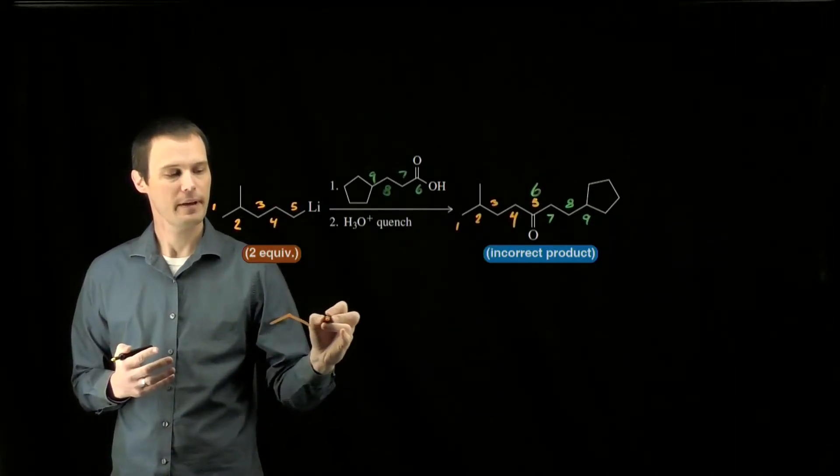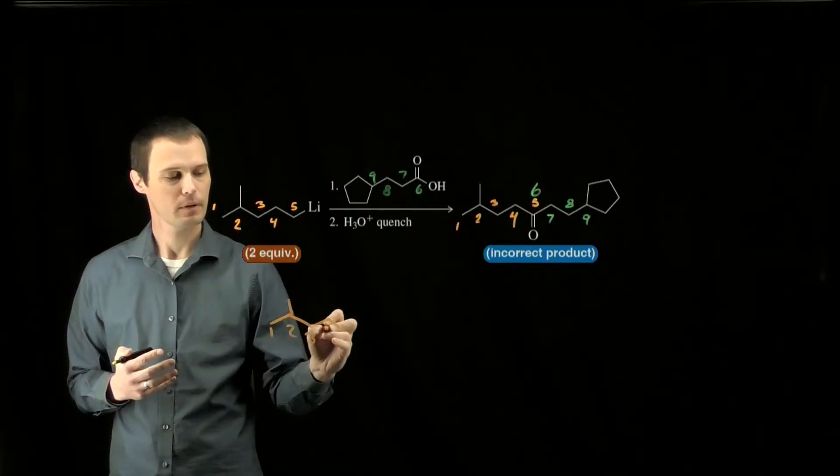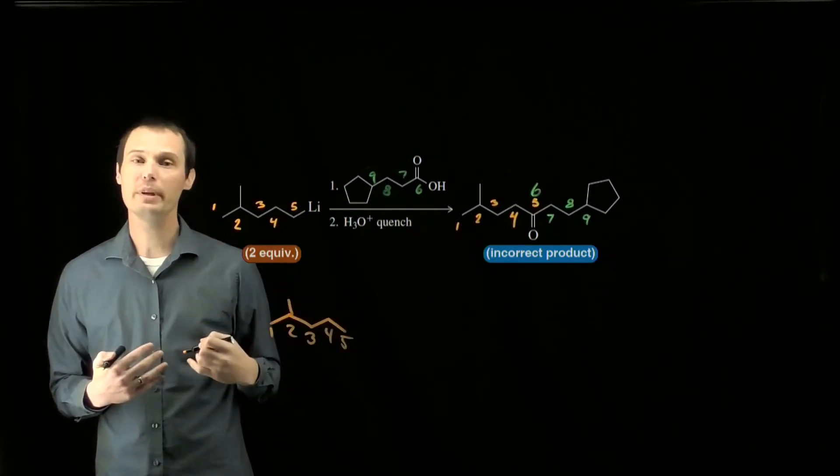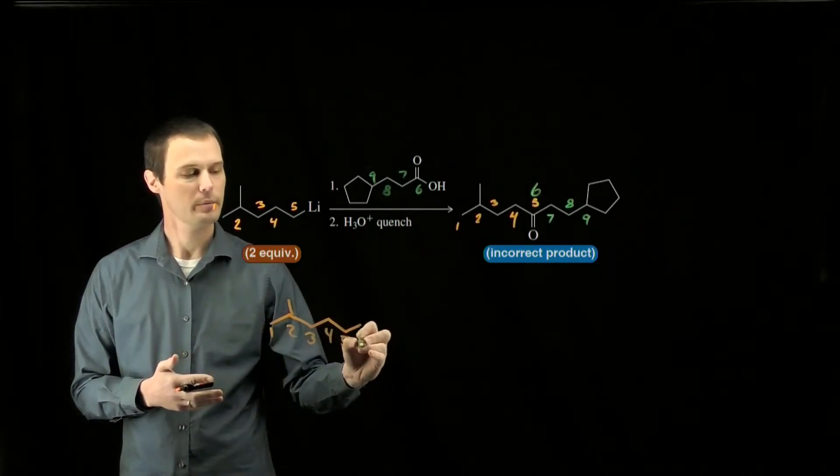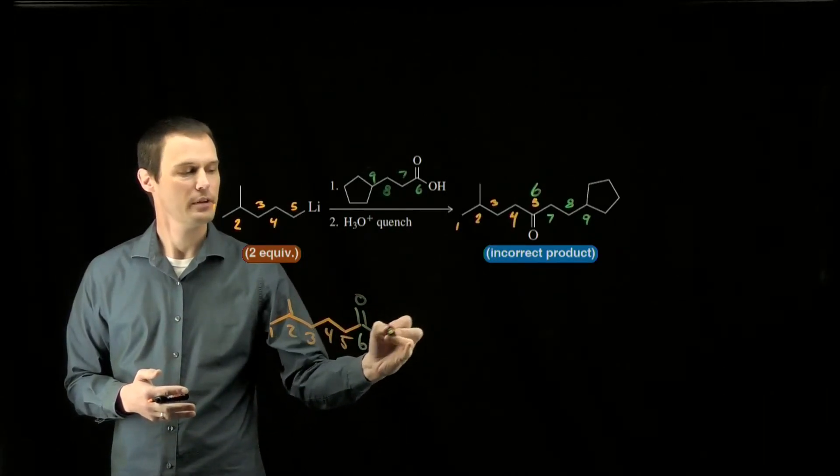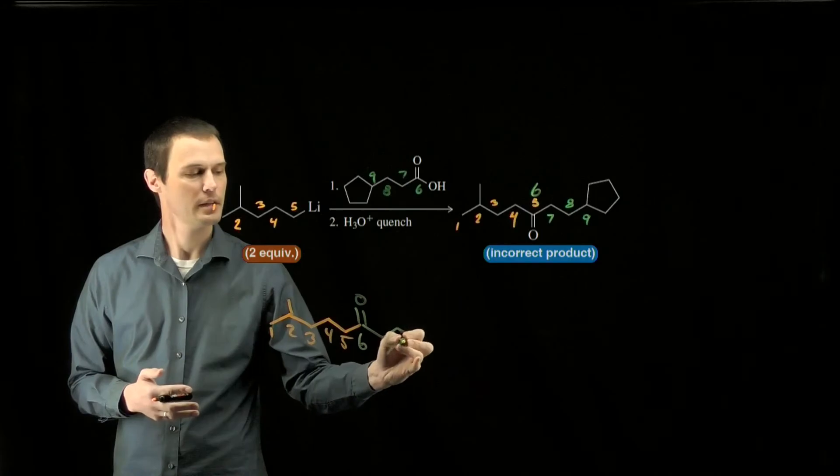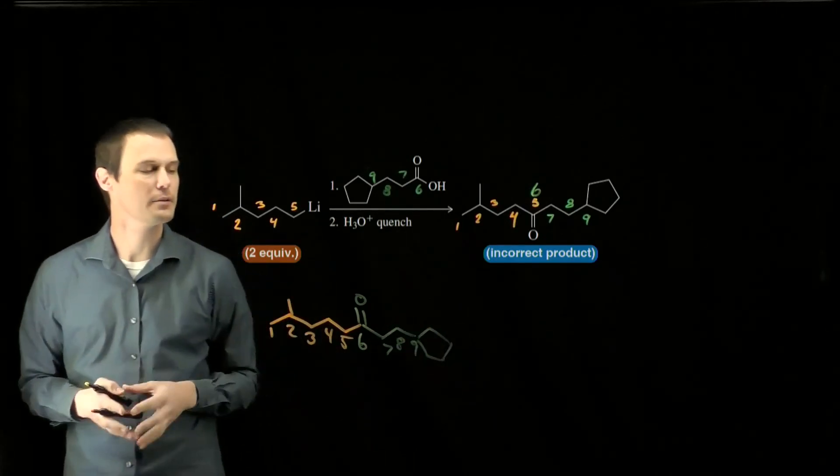We should have the five carbons of our alkyl lithium, and then between carbon 5 and carbon 6 there's going to be a new bond. There's going to be a new bond to carbon 6, and that is where our ketone will go, and then we'll have carbon 7, 8, and 9 extending away from there, and then the cyclopentane ring at the end.